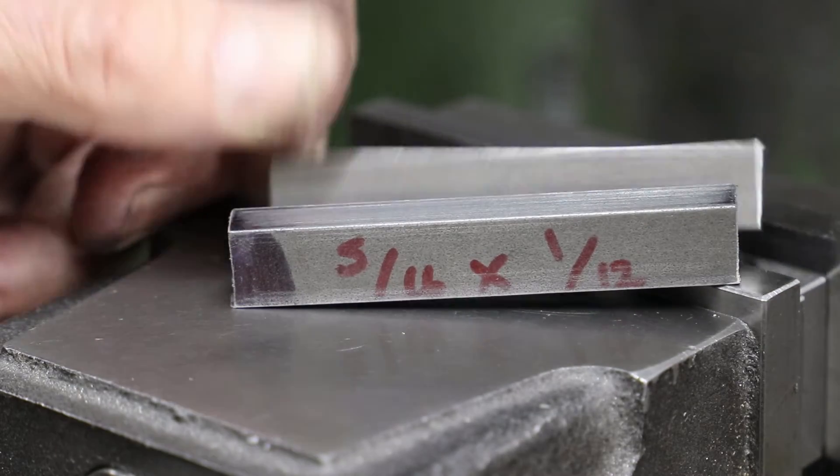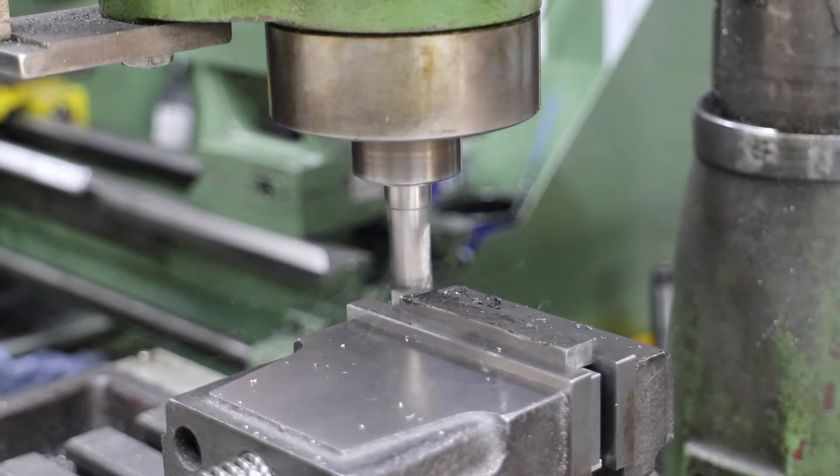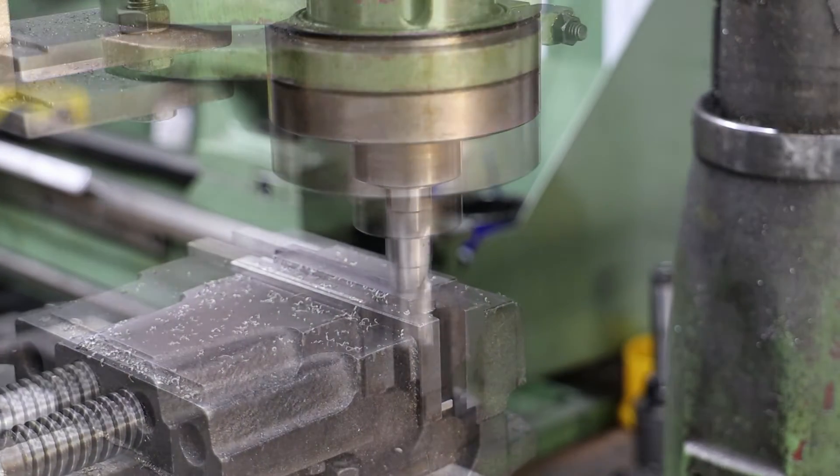I'm going to make each rod from a solid piece of mild steel, so the first job is to bring these pieces of stock down to 11.9 by 6.3mm and then to length at 69.85mm.